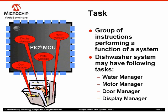For example, in a dishwasher system, the following tasks may exist. 1. Water Manager — this task manages the water intake and drain. 2. Motor Manager — this task manages the direction and speed of a motor according to the selected wash cycle. 3. Door Manager — this task tracks status of the dishwasher door and informs other tasks of the current status or any change in status. 4. Display Manager — this task tracks status of various functions of the dishwasher and displays it on the LCD mounted on the front panel.